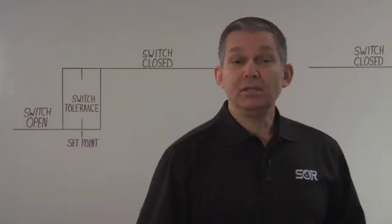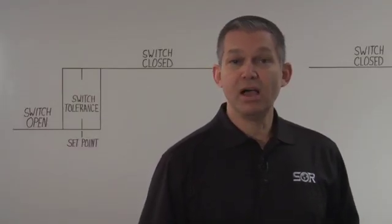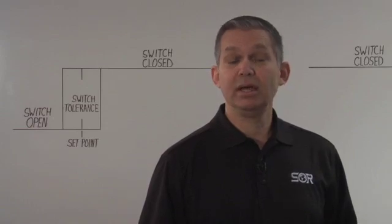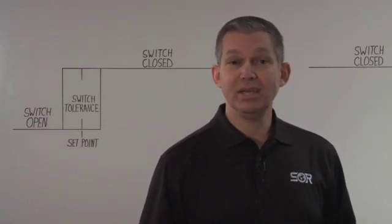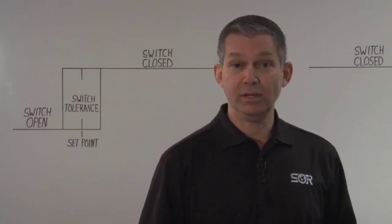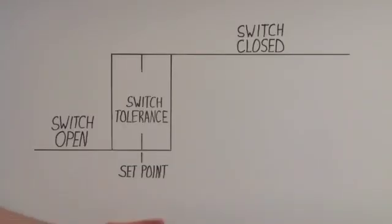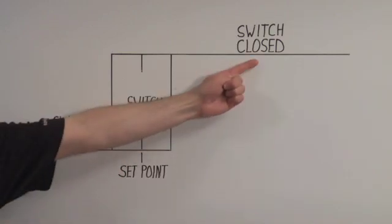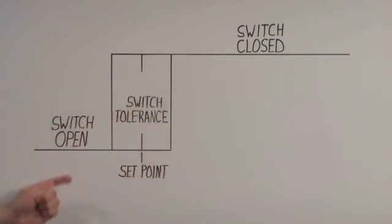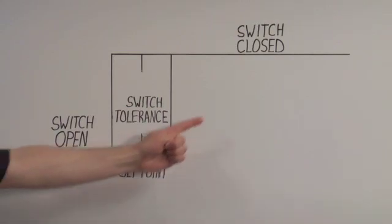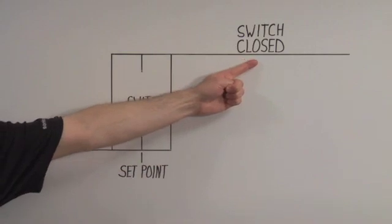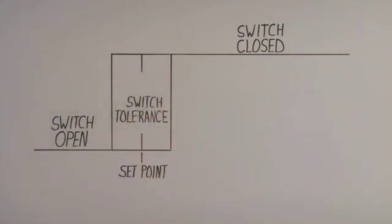We have looked at the window or default configuration for the 805QS switch output. As I mentioned earlier, the 805QS can be configured three different ways. So let's take a look at the other two configurations. Here is the second diagram. It shows the single point opened closed switch point type. If the switch is off, open, it will close when the pressure of the media reaches the set point and will remain on closed as long as the pressure is greater than the set point.